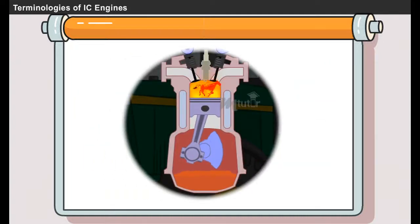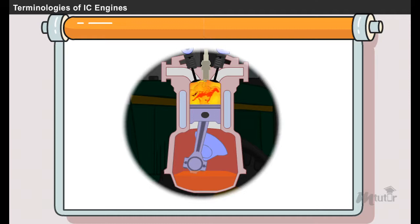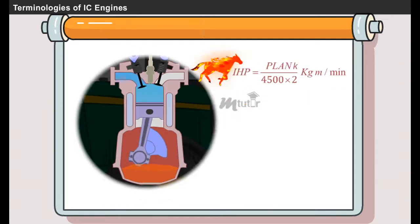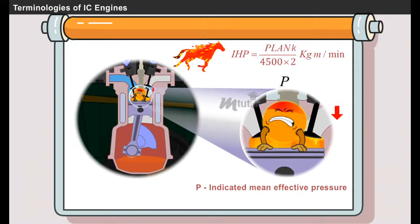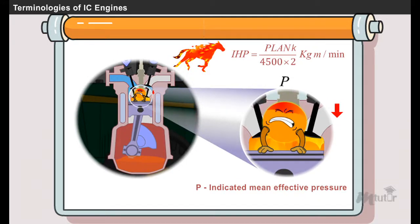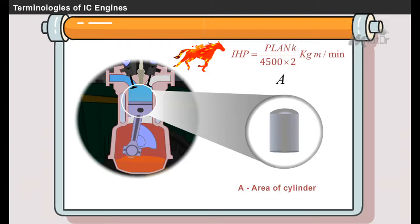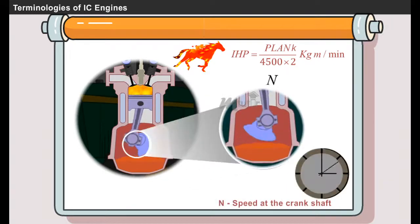The power that is actually developed in the engine cylinder is called indicated horsepower. It is given by IHP = PLANK / (4500 × 2), where P is the average pressure produced in the combustion chamber which is called as indicated mean effective pressure, L is the stroke length, A is the area of cylinder, N is the speed at the crankshaft, and K is the number of cylinders in the engine.